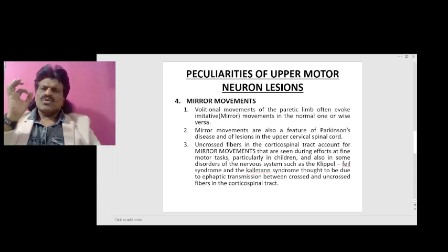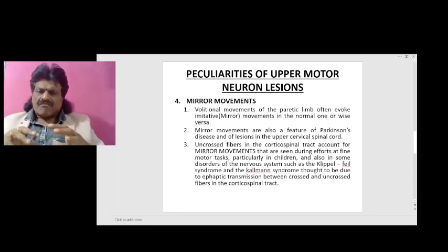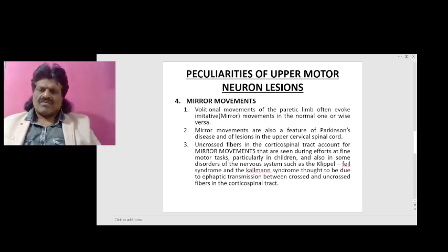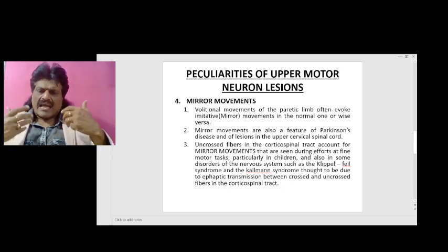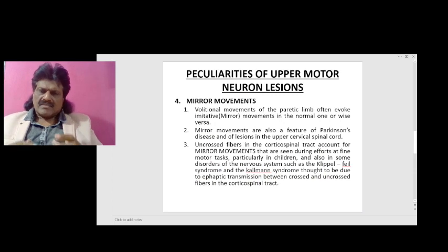Uncrossed fibers in the corticospinal tract account for mirror movements seen during efforts at fine motor tasks, particularly in children and in disorders of the nervous system such as Klippel-Feil syndrome and Kallmann syndrome. These are thought to be due to haptic transmission between crossed and uncrossed fibers in the corticospinal tract.